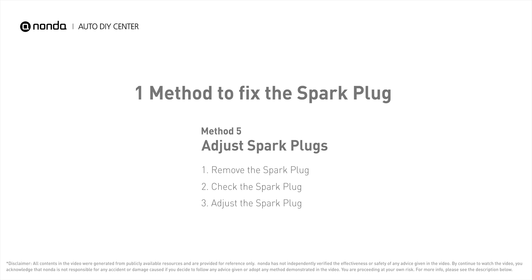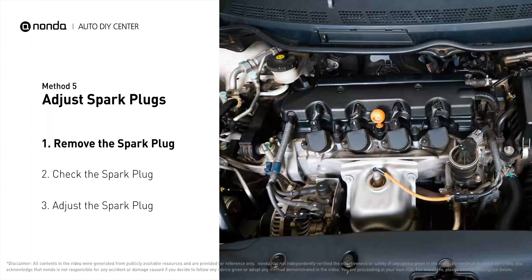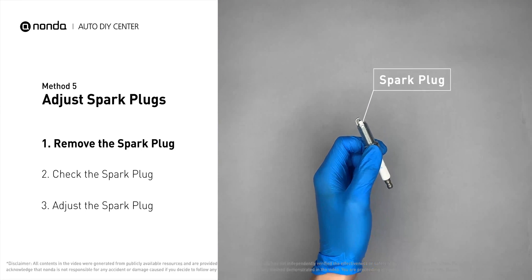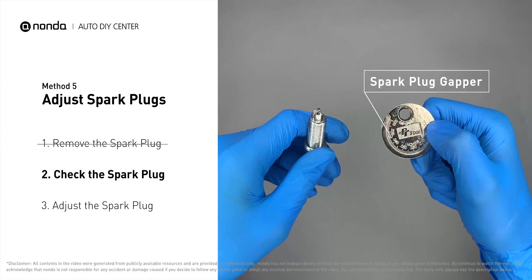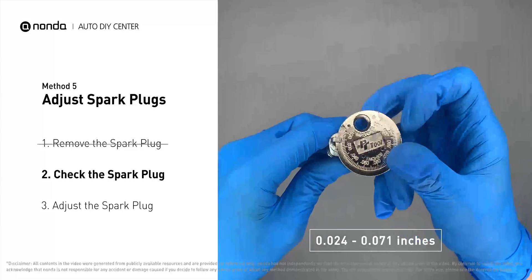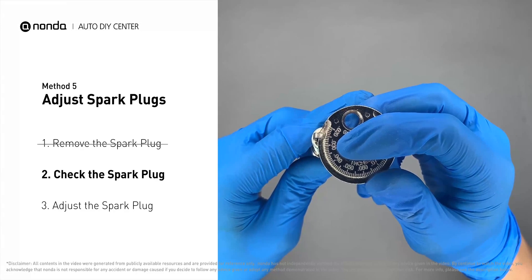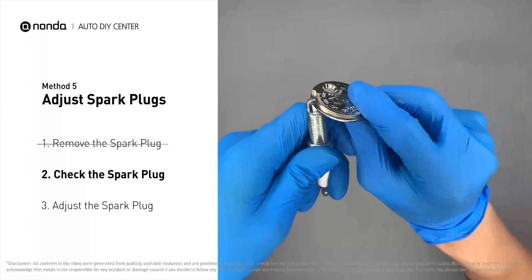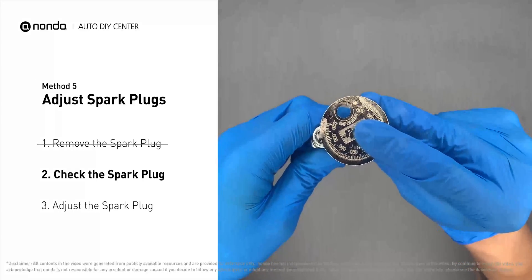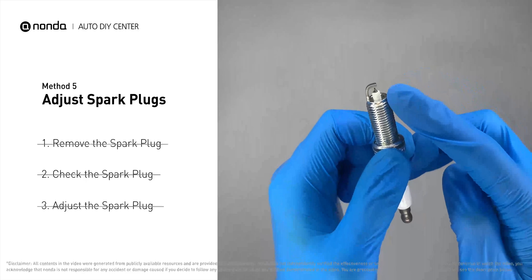Here is one method to fix the spark plug. Method 5: Adjust spark plugs. The spark plugs are located at the engine end of the wires under the plug covers. Carefully remove the spark plug and use a spark plug gapper to check the spacing. Normally the spacing should be between 0.024 to 0.071 inches. Use the spark plug gapper to increase the spacing back to the normal range. If you see obvious damage on the spark plug, simply replace it with a new one.